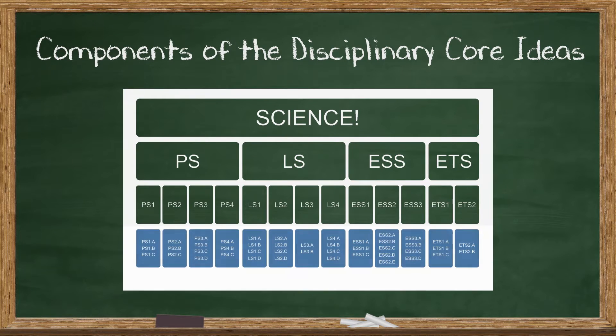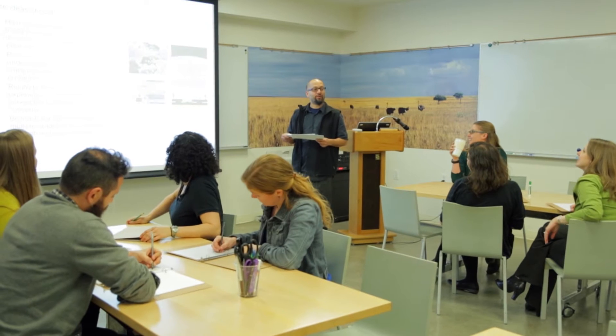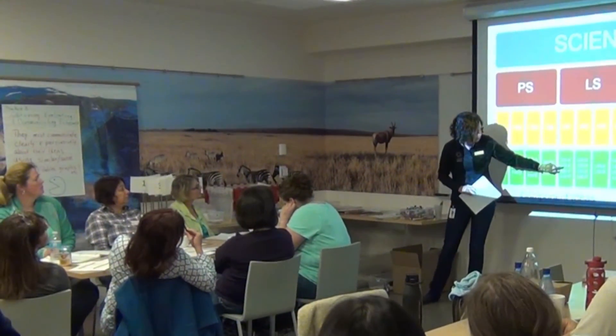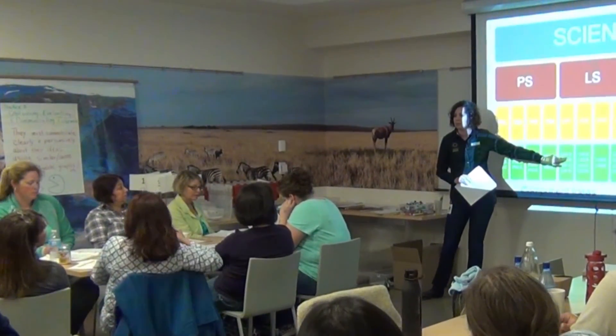Make sure to read the lesson plan where we share some useful techniques we've found to help facilitate the discussion. From here, you can get into some of the component ideas of the DCIs — the bottom row — to whatever detail you see fit. Once participants have seen the component ideas, you can also point out that they now have the ability to read some of the codes used throughout the NGSS literature.